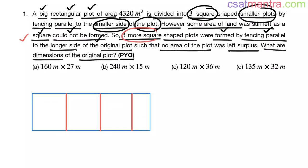So three more square-shaped plots were formed by fencing parallel to the longer side of the original plot such that no area of the plot was left surplus. This is the longer side of the plot. Now I have formed three square-shaped plots. No area is left now.